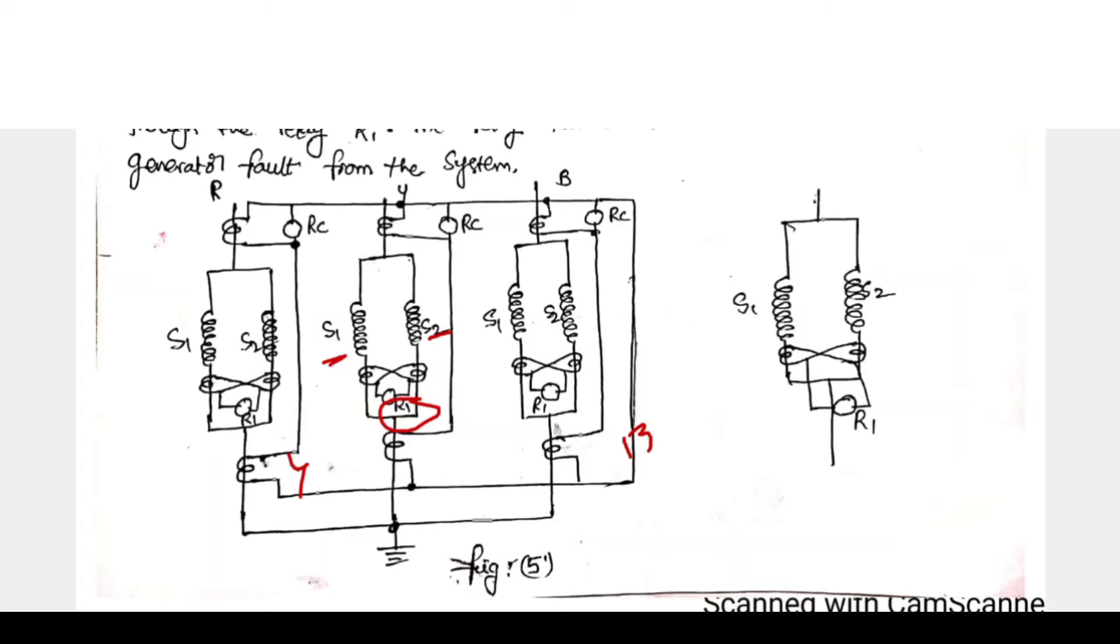However, inter-turn fault protection is provided for only multi-turn generators, such as hydroelectric generators. We are provided multi-turn generators, those are having double winding armatures.